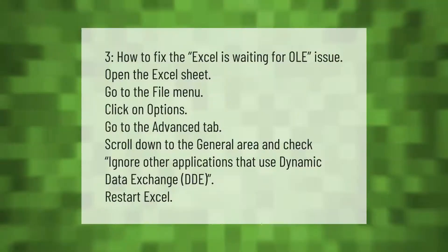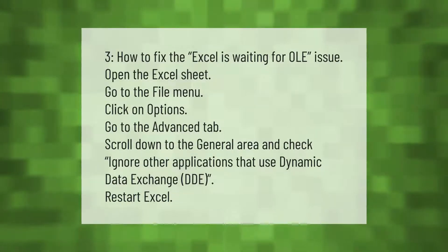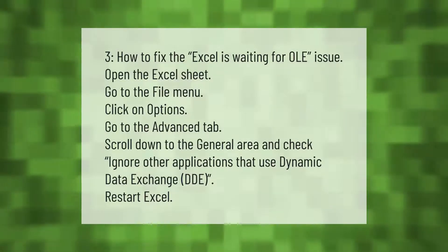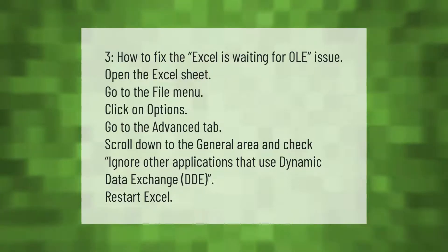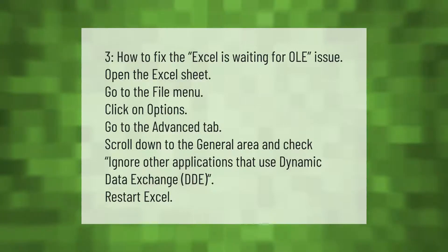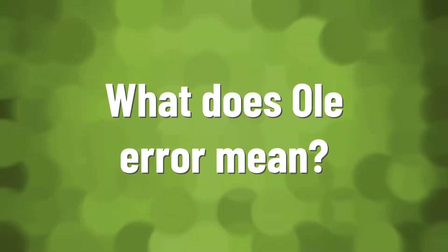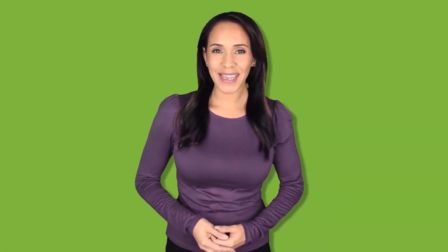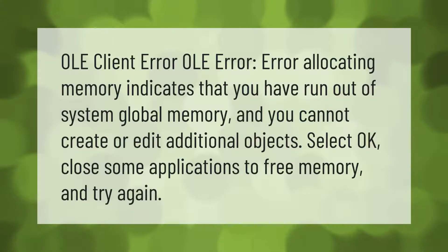How to fix the Excel OLE action error: Open the Excel sheet, go to the File menu, click on Options, go to the Advanced tab, scroll down to the General area, and check 'Ignore other applications that use Dynamic Data Exchange (DDE)'. Then restart Excel.